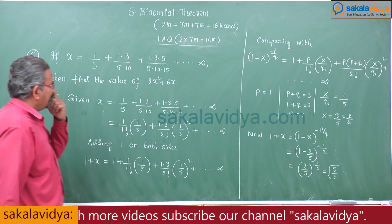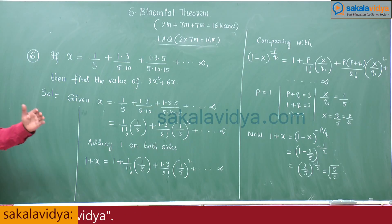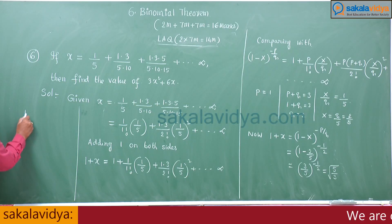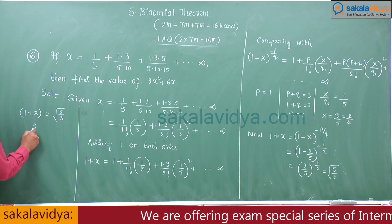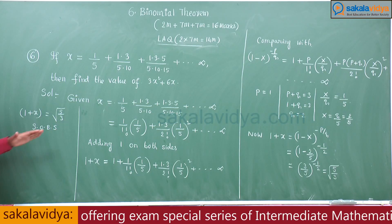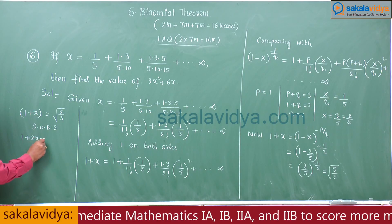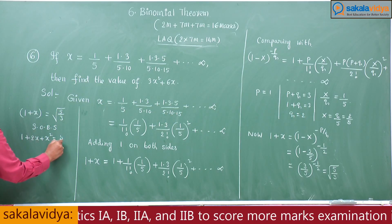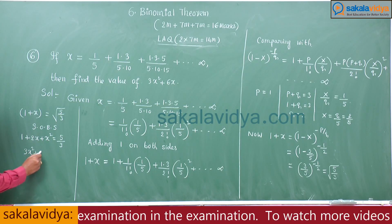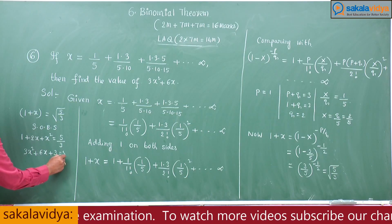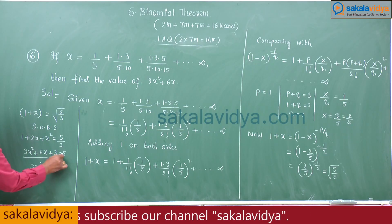We need to find 3x² + 6x. Since 1 + x = √(5/3), squaring both sides: 1 + 2x + x² = 5/3. Cross-multiplying: 3x² + 6x + 3 = 5, so 3x² + 6x = 5 − 3 = 2. The problem is complete.